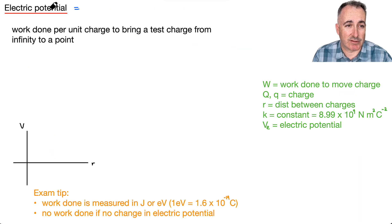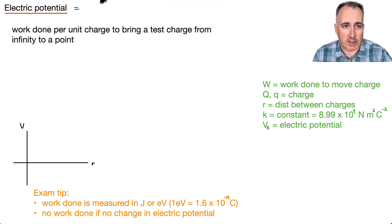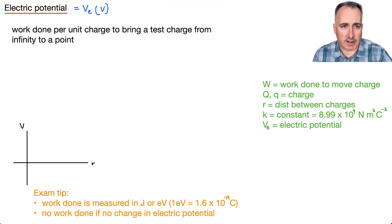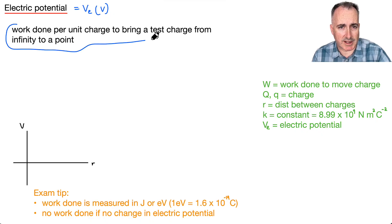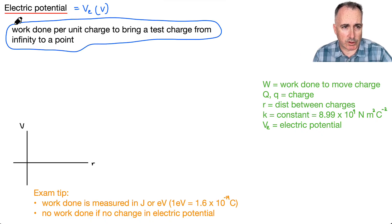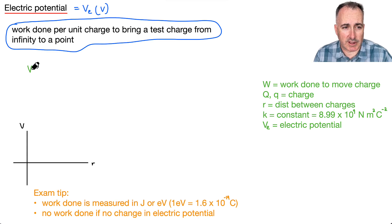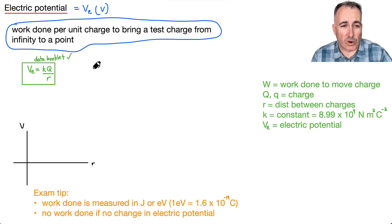Now we've got electric potential — not to be confused with electric potential energy from before. This is just electric potential. We're going to write it as V with a little subscript e, and that's going to be measured in volts. So it's the work done per unit charge to bring a test charge from infinity to wherever you are. The equation is Ve equals KQ over R. We also have the work done equation: W equals Q times delta Ve.